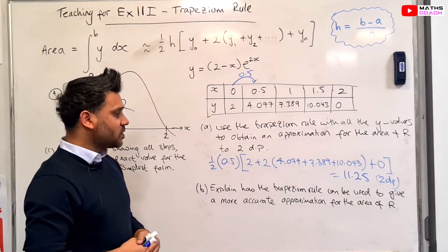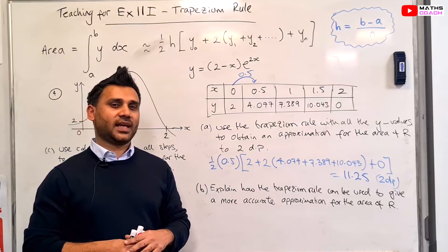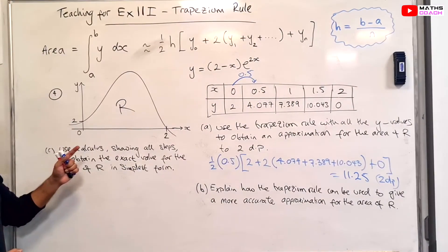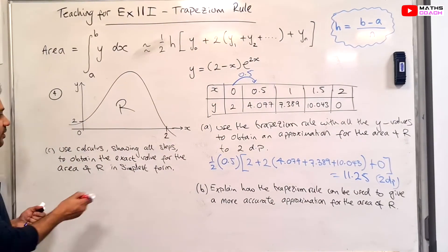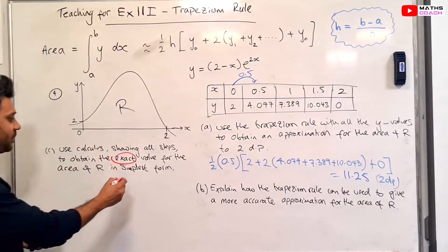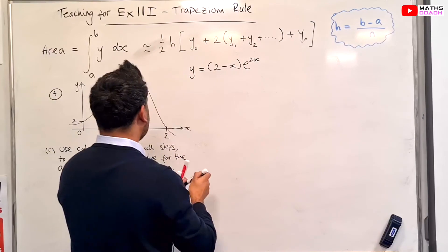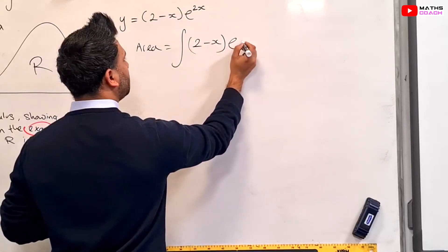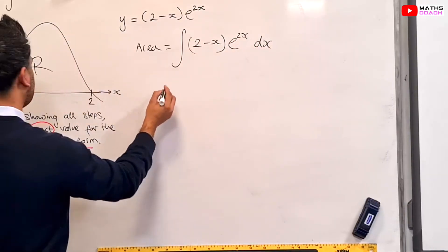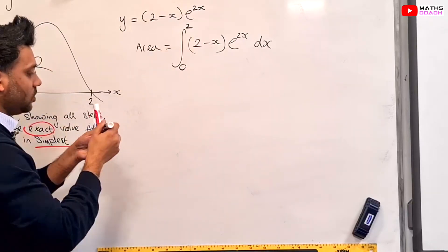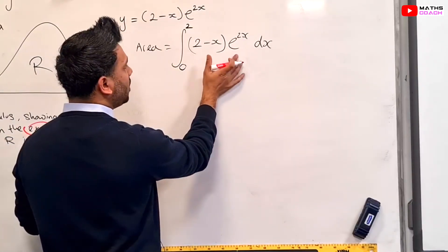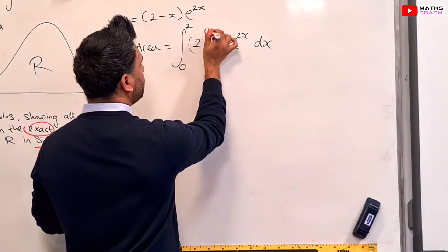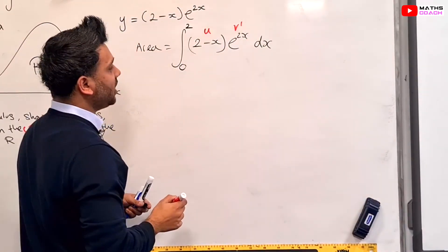Part b: explain how the trapezium rule can be used to give a more accurate approximation for the area. The most obvious answer is to increase the number of strips. Part c: use calculus showing all your steps to obtain the exact value for the area of region R. The exact area is given by the integration of (2 − x)e^(2x) with respect to x from 0 to 2. Since this is a product of two functions, we have to perform integration by parts, with u = (2 − x) and v' = e^(2x).